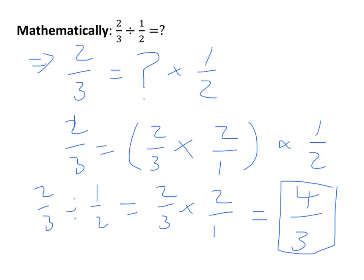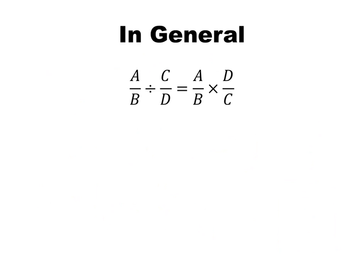Now look at what we did: we started with a division problem and turned it into a multiplication problem. The first fraction stayed the same, but we flipped the second fraction — instead of one-half, we used two-over-one. We can generalize this as an algorithm: A-over-B divided by C-over-D equals A-over-B times D-over-C. Take the reciprocal of the second fraction and multiply. That's all there is to dividing fractions.